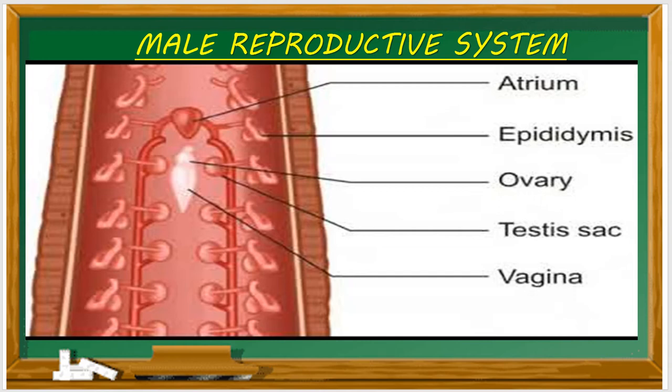There are different pores on the leech body. One pore is the male genital pore, and the penis opens through this male genital pore.